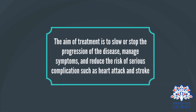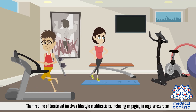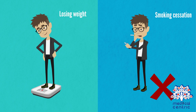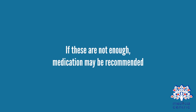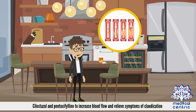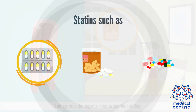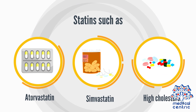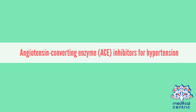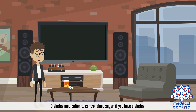The aim of treatment is to slow or stop disease progression, manage symptoms, and reduce the risk of serious complications such as heart attack and stroke. The first line of treatment involves lifestyle modifications including regular exercise, eating a balanced diet, losing weight, and smoking cessation. If these are not enough, medication may be recommended: cilostazol and pentoxifylline to increase blood flow and relieve claudication symptoms; daily aspirin or clopidogrel to reduce blood clotting; statins such as atorvastatin or simvastatin to reduce high cholesterol; ACE inhibitors for hypertension; and diabetes medication to control blood sugar.